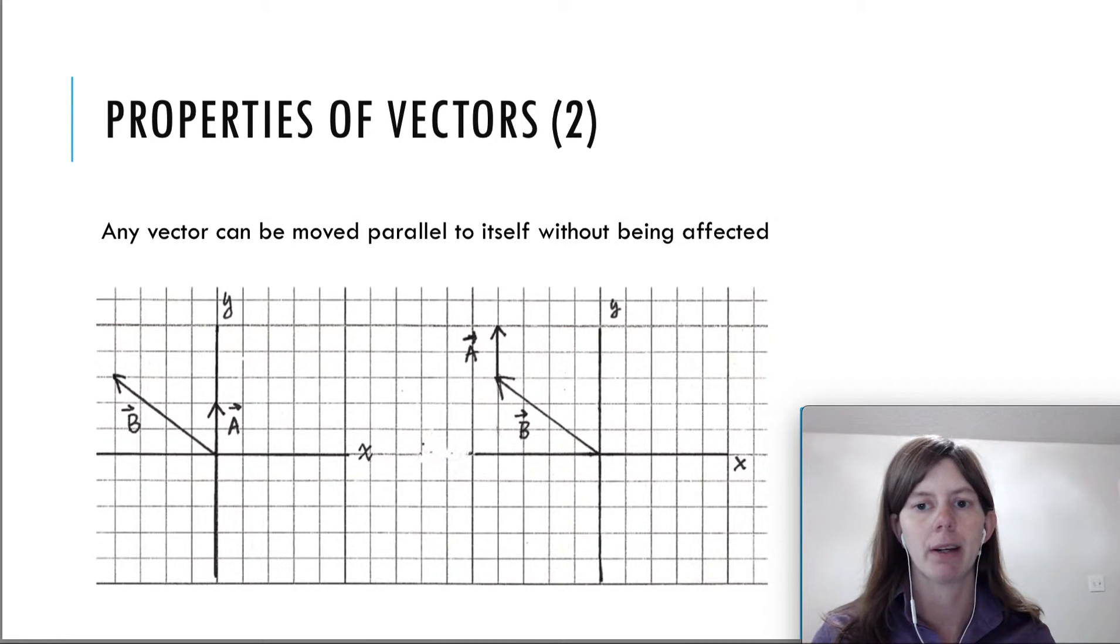Second property of vectors is related to what we just talked about. You can move a vector anywhere you want parallel to itself, meaning you're not changing the direction of it, and you haven't changed the vector. In this picture, we have moved vector a which was here and we have moved it here to the tip of vector b, and we haven't changed anything. This is useful when we start talking about vector addition, which we will be doing in the next video.